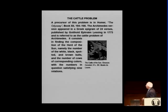And it appears in a Greek epigram, discovered in 1773 or so. And consists in finding the composition of the herd of the sun, the number of cows and bulls, white, black, spotted. And these numbers, however, there are some relations, which I'm not going to write down.